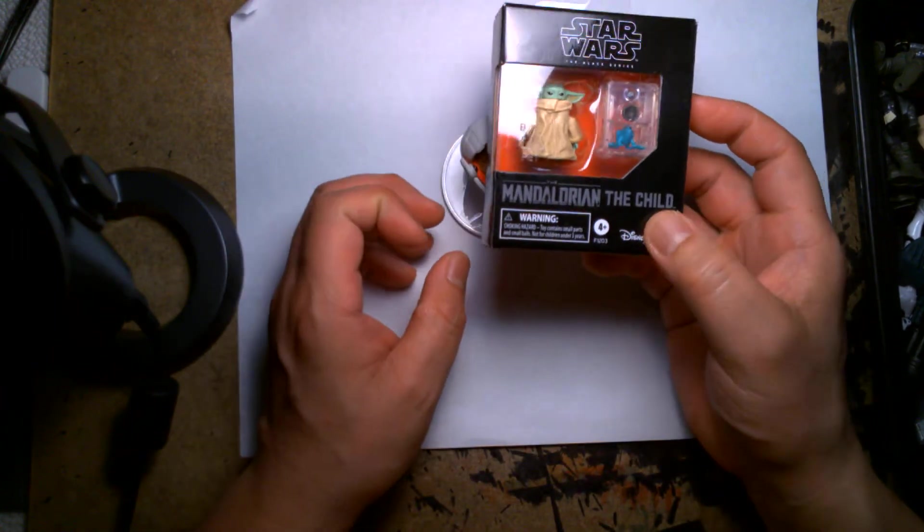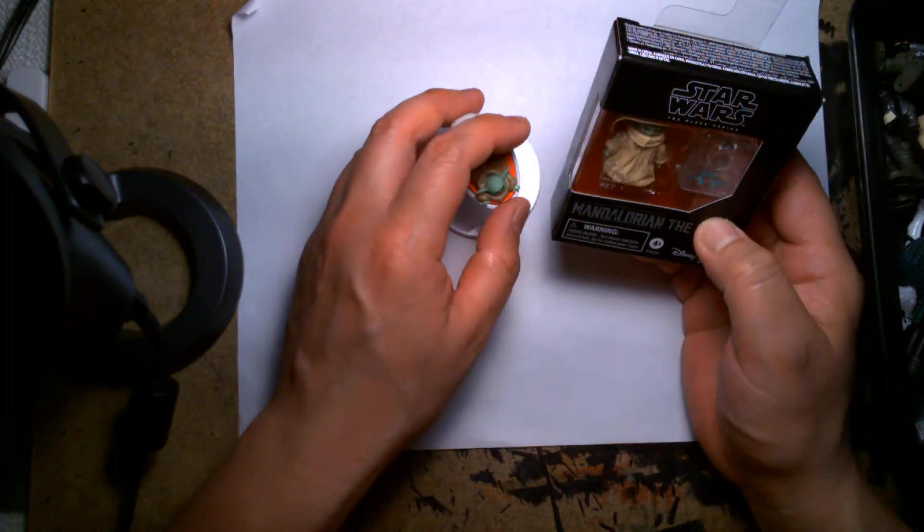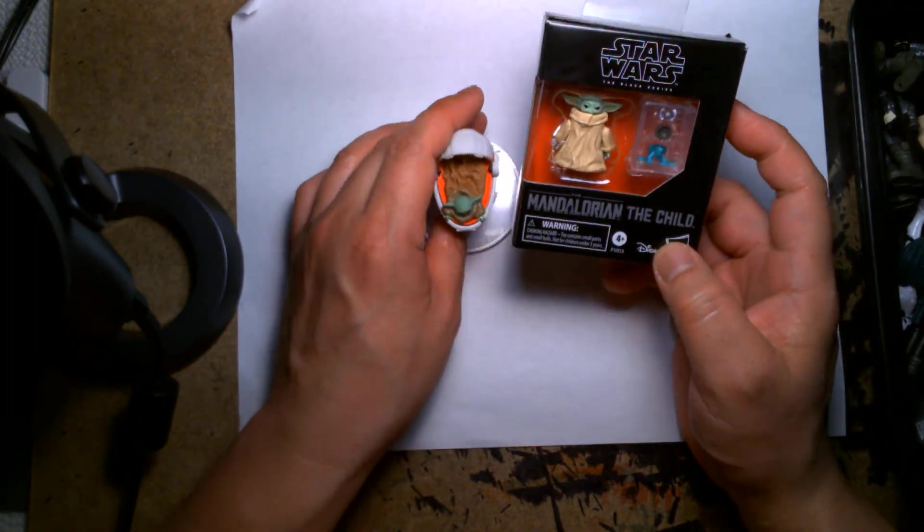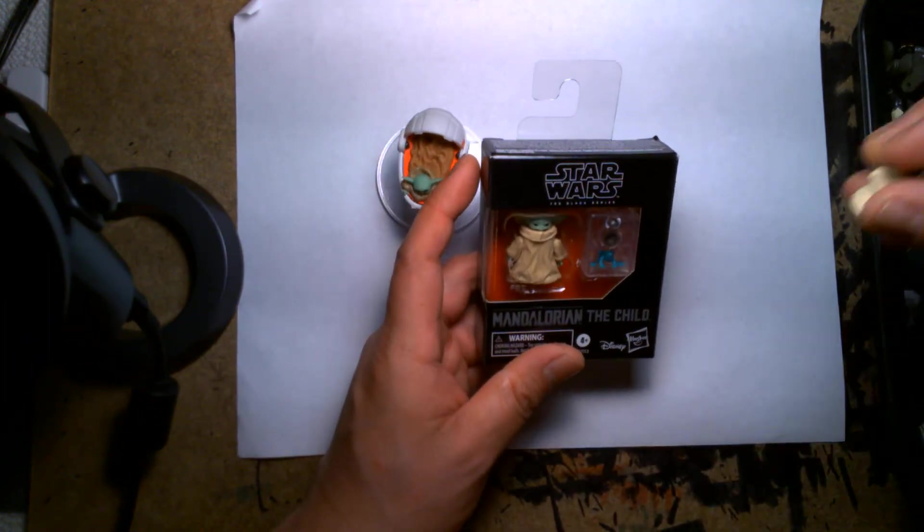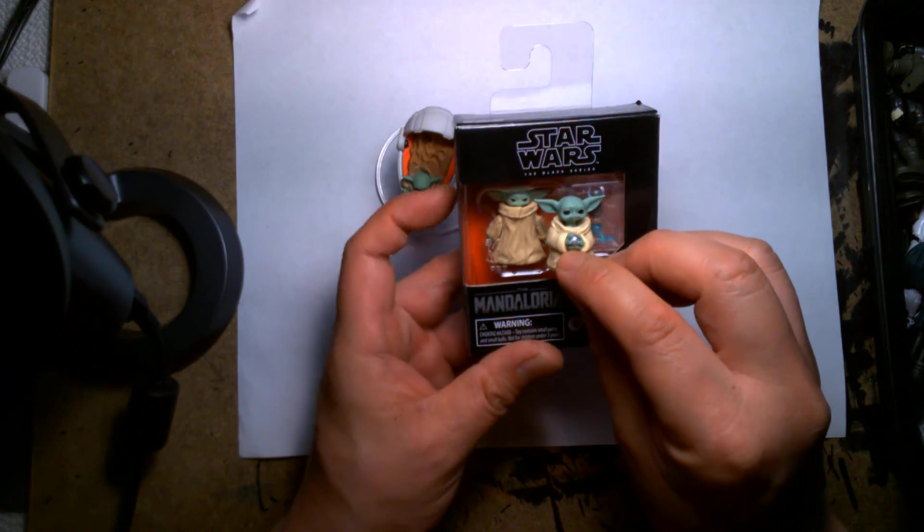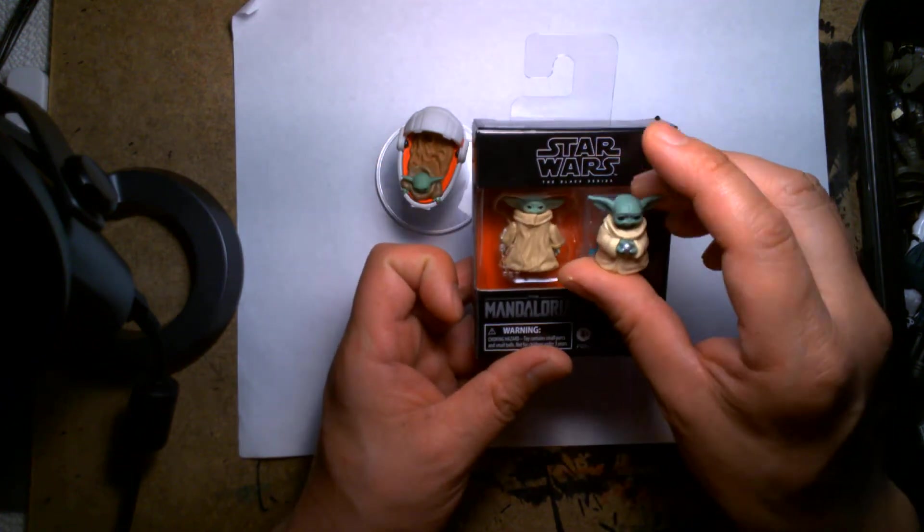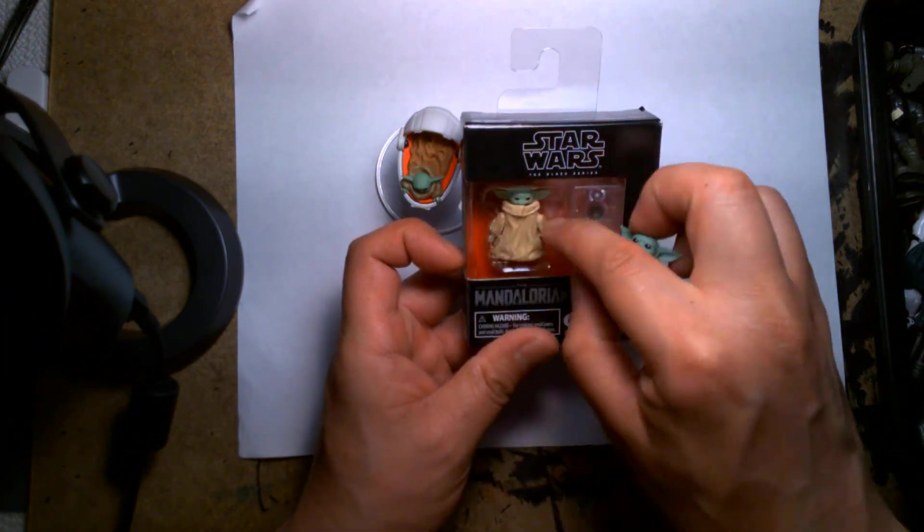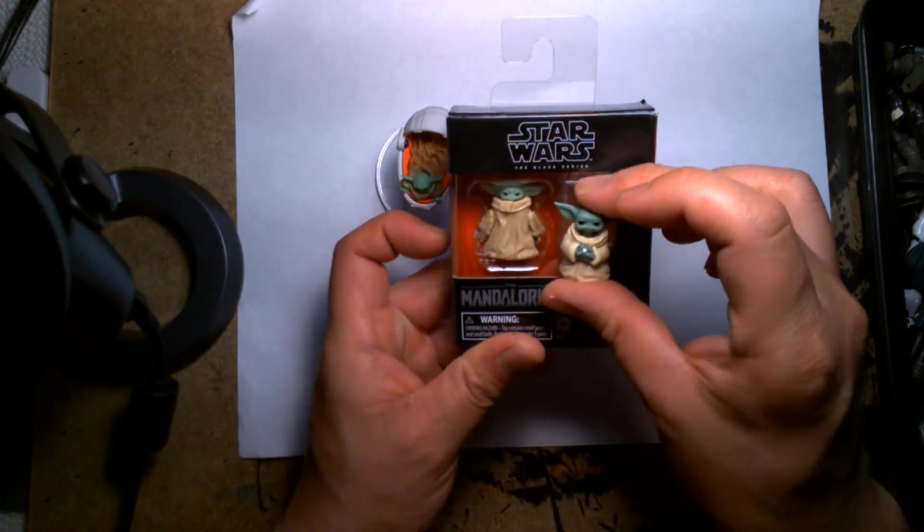I have one more Grogu figure we can look at. I'm not taking this out, I'm just going to leave it inside the package. This is the Black Series Child, and it's almost the same size as the Mission Fleet stuff. The Mission Fleet has a bigger head because these are a little bit more cartoony proportions. This one's a little bit taller but its proportions are more realistic to what you see on the television show, and it's much bigger than this guy here.